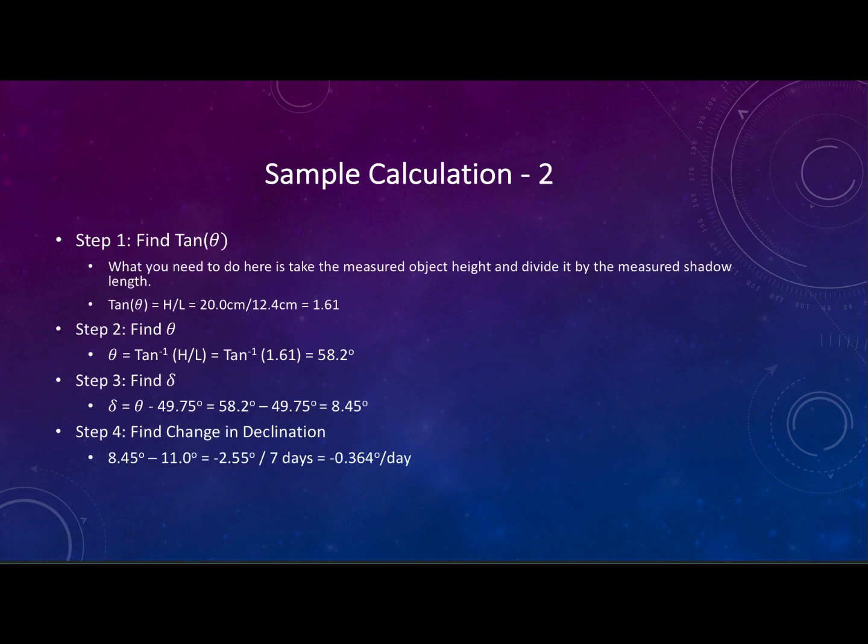So sample calculation number two here is looking at the second set of data. First we're finding the tangent of theta. Still every one of mine is 20 centimeters, this length is now 12.4 centimeters. We divide those two and we find out that the tangent of theta is 1.61. Finding the altitude we take the inverse tangent of that and find 58.2 degrees. To find the declination we take that 58.2 and we subtract 49.75 and find out that the declination of the sun is 8.45 degrees.